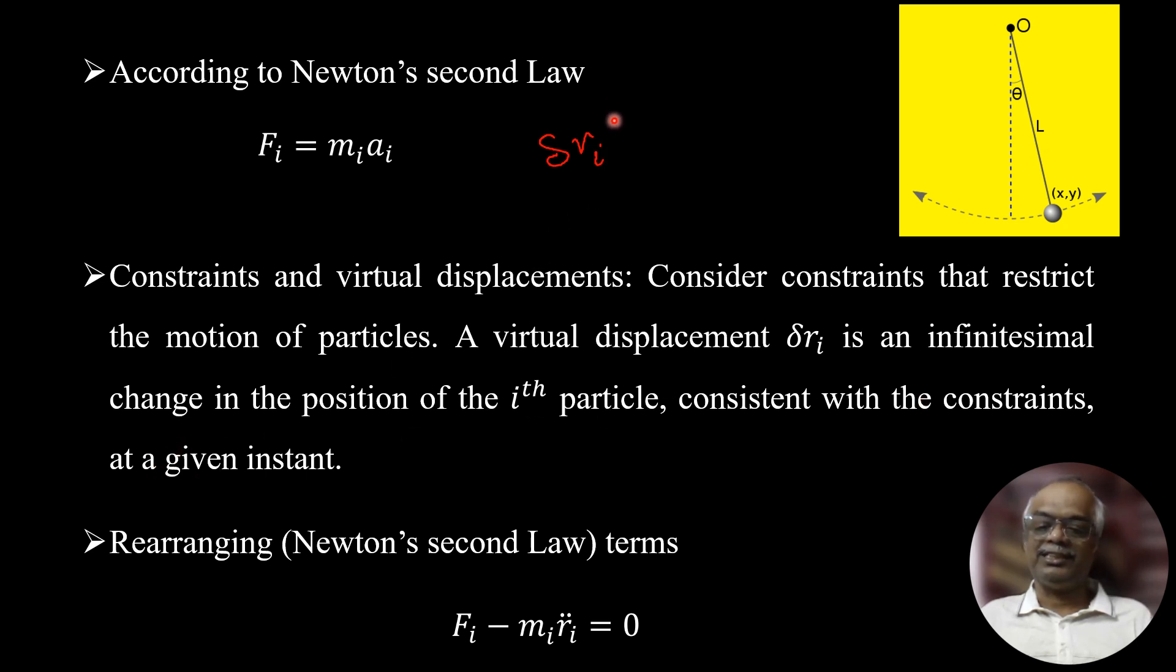So there is a constraint in the movement. Rearranging the Newton's second law, rearranging the terms: F_i minus m_i r̈_i = 0. This r double dot is the acceleration, that is second order derivative with respect to time, which is equal to zero. This is also one form of Newton's law. Mathematically both will be the same.